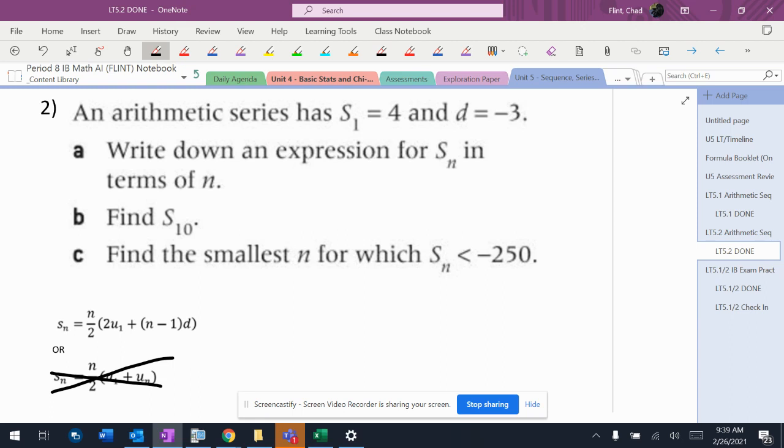So I can then take this and use that first formula. I can plug in what I know. So S_n equals n over 2 times 2 times U_1, which is 4, so 2 times 4 plus n minus 1. The common difference is negative 3. So there's my formula. I plugged in the common difference and I plugged in the first term. Now I can use that with any n value, any number of terms to spit out a sum. Remember, this is the sum formula.